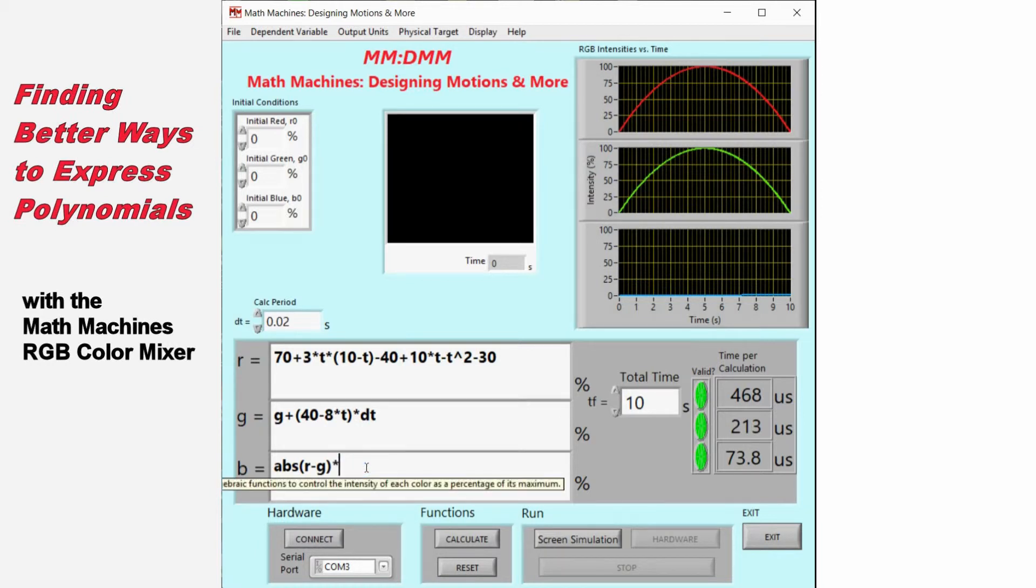Expanding the scale for the blue display shows a difference of nearly 1% between the two intensities. The precision could be improved by decreasing the calculation period, but it might be better to evaluate each derivative at the middle of the preceding interval rather than at the end.